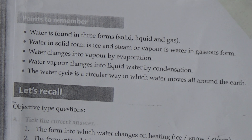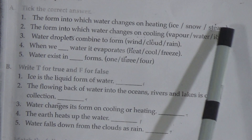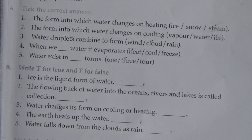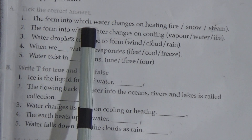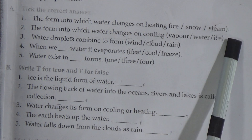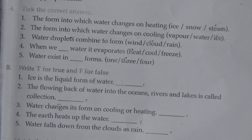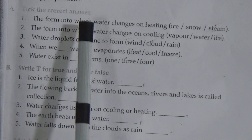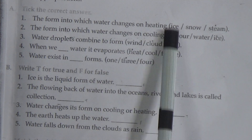Now we do the exercise from this chapter. Exercise A — tick the answer. Here is a sentence and three words; choose which word is appropriate. Number 1: the form into which water changes on heating — ice, snow, steam. We know that when we give heat to the water, after a few minutes it becomes boiling and vapor comes out. So it is steam. We put the tick mark on steam.